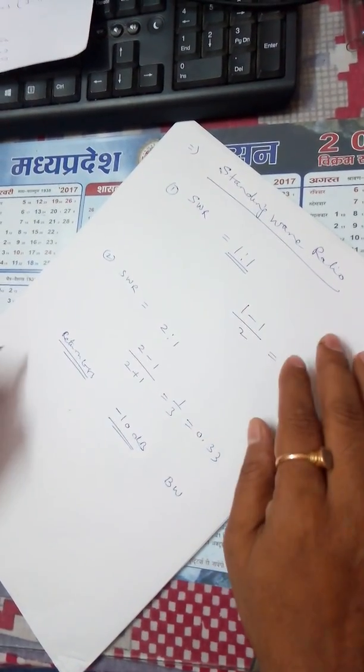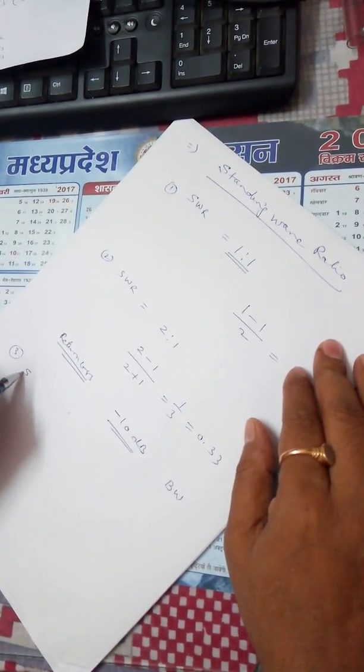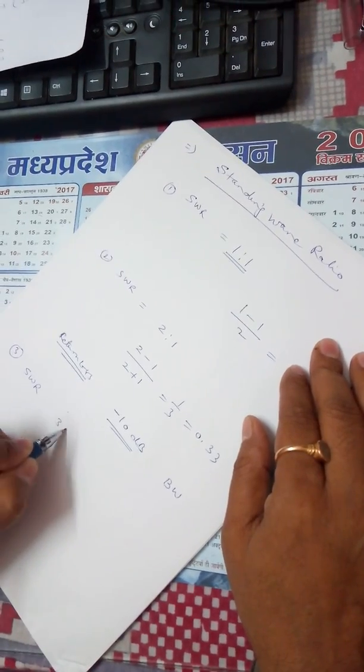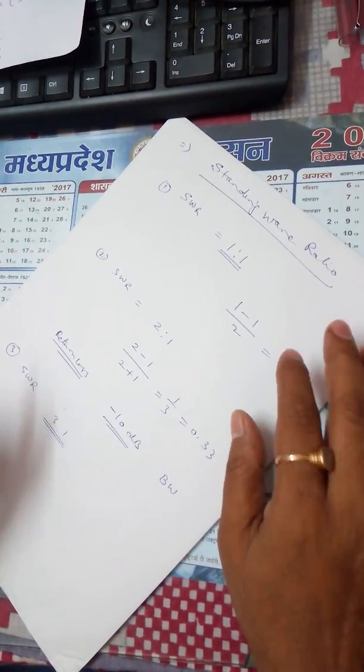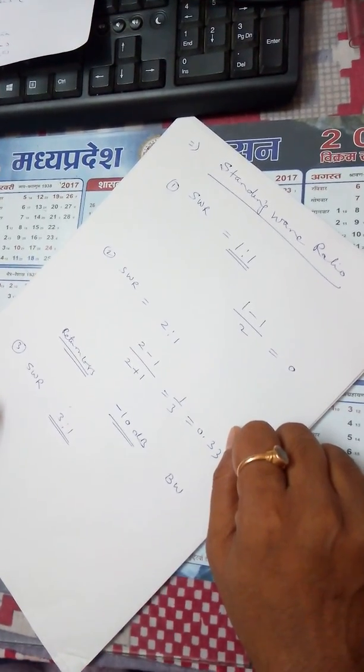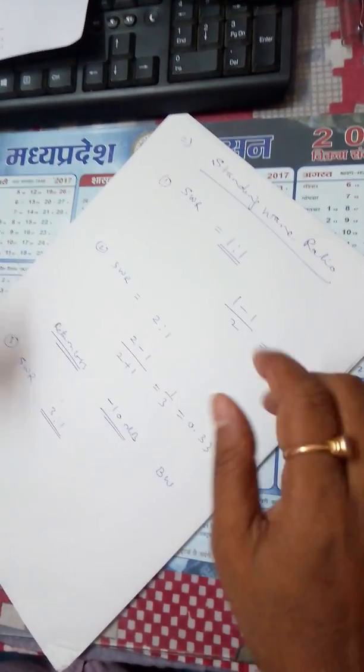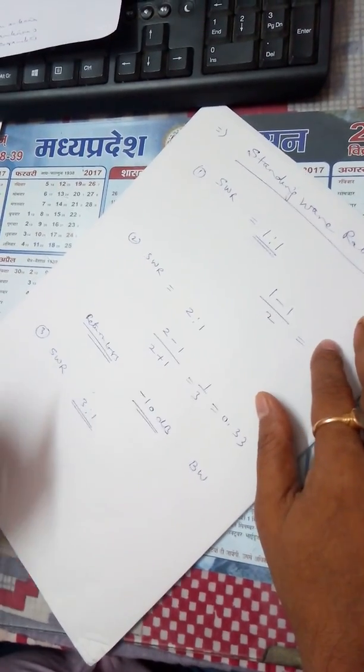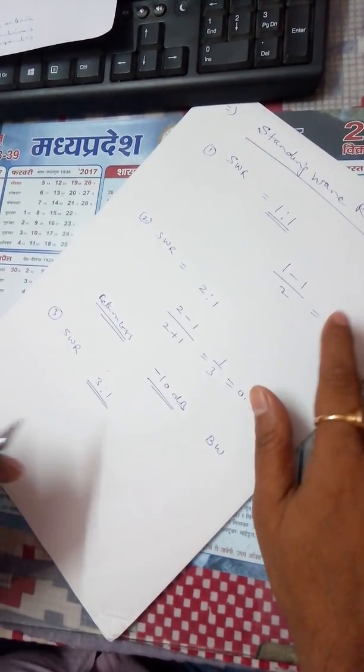Similarly we may have the SWR value of 3 is to 1. So this 3 is to 1 ratio is considered in 4G and 5G antennas. Previous antennas were working on 2 is to 1 as well as 3 is to 1. But what happens in case of the SWR equals 3 is to 1?